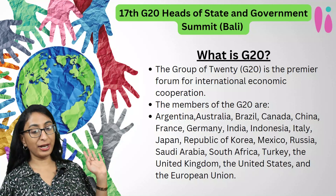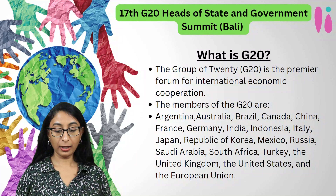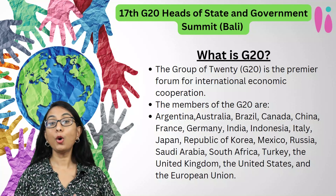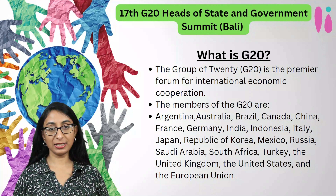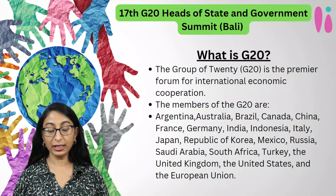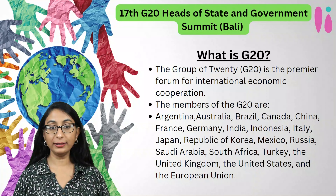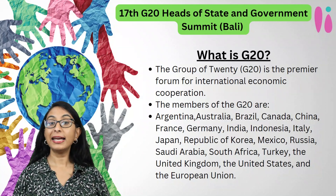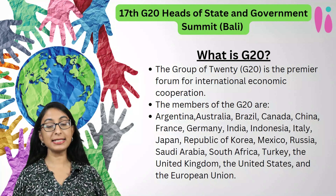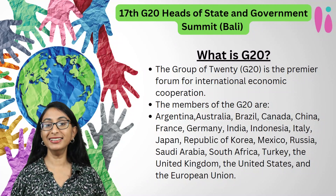G20 stands for Group of 20. It includes various countries like Argentina, Australia, Brazil, Canada, and others along with the European Union. Every year, one country holds the presidency of G20, and that country will host the summit. This year, the presidency is with Indonesia, and that is why they are hosting the summit in Bali.